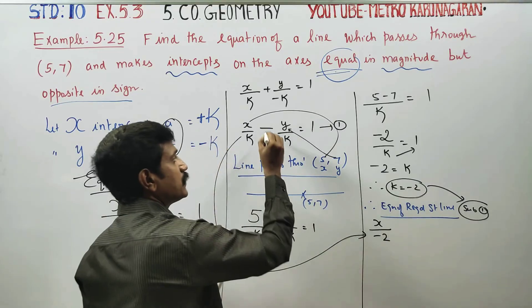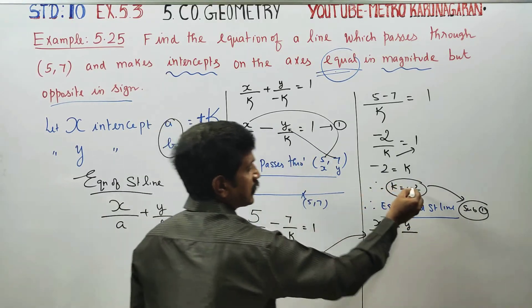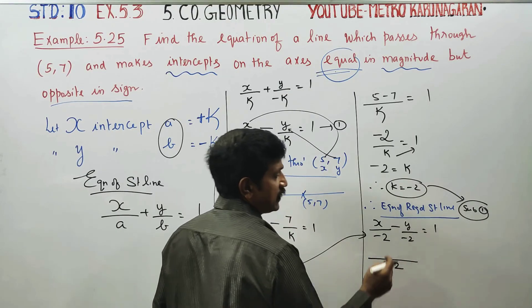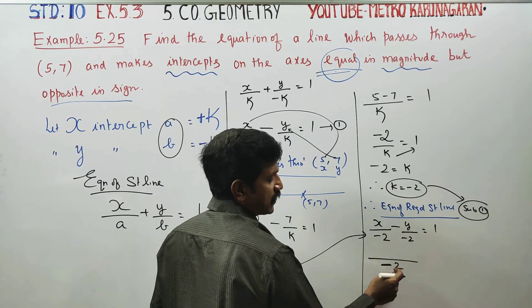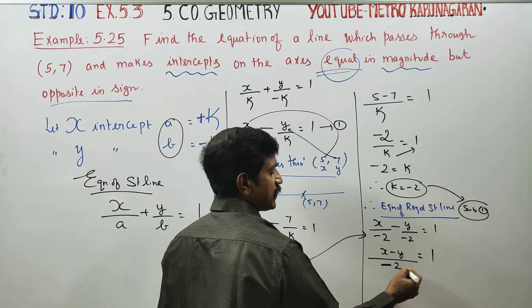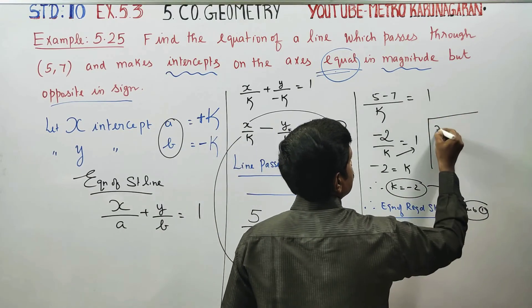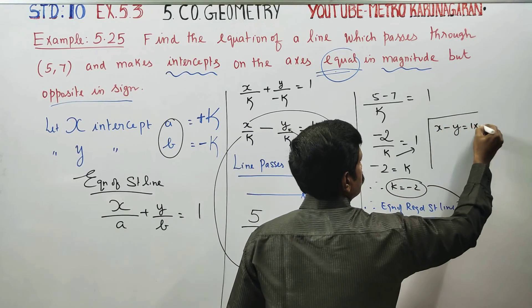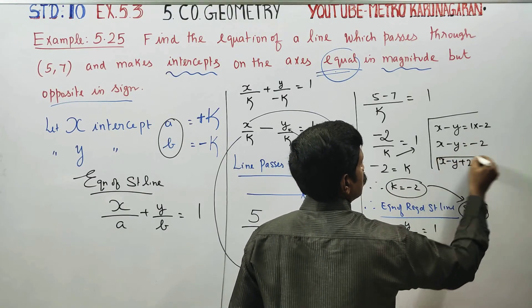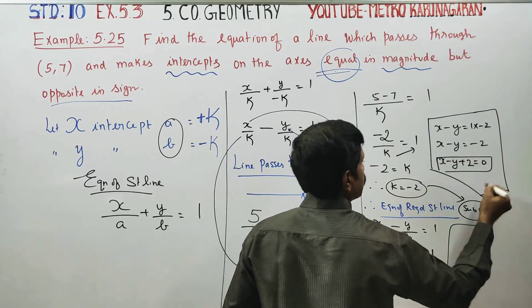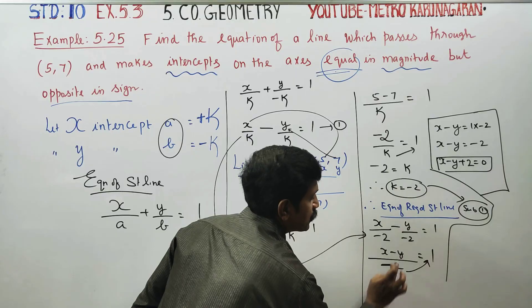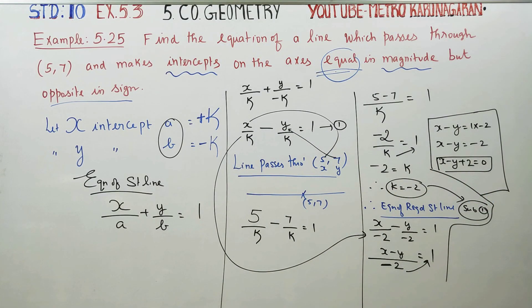Substituting k equals minus 2 into the equation, x by minus 2 minus y by minus 2 equals 1. Cross multiplying by minus 2, we get x minus y equals minus 2, which gives x minus y plus 2 equals 0. This is the equation of the required straight line. Thank you.